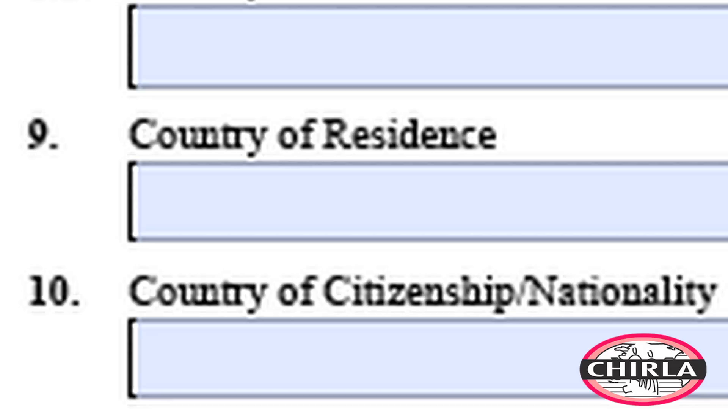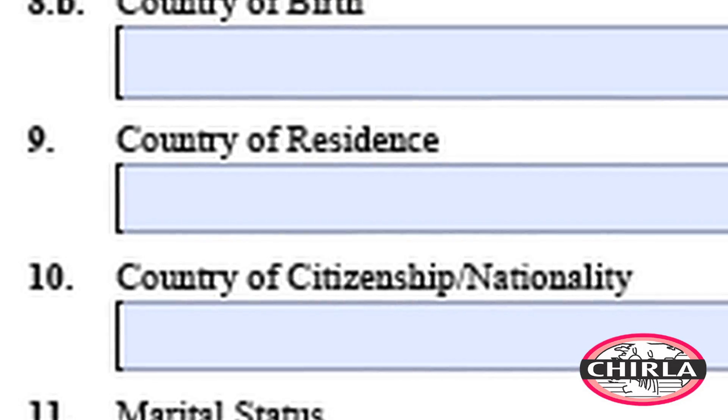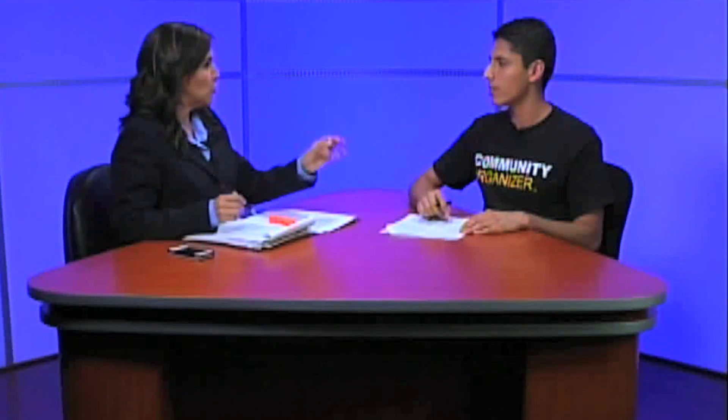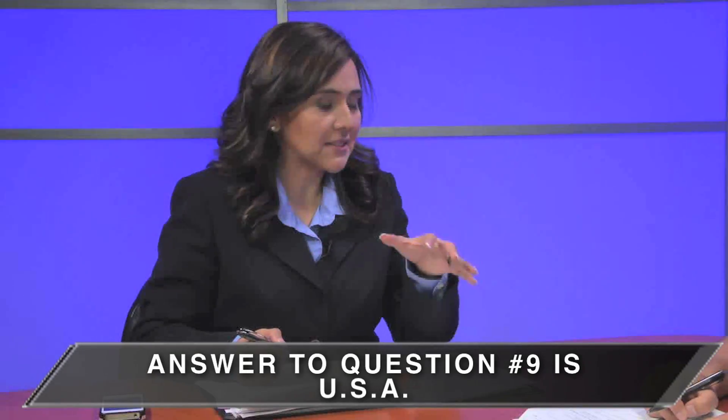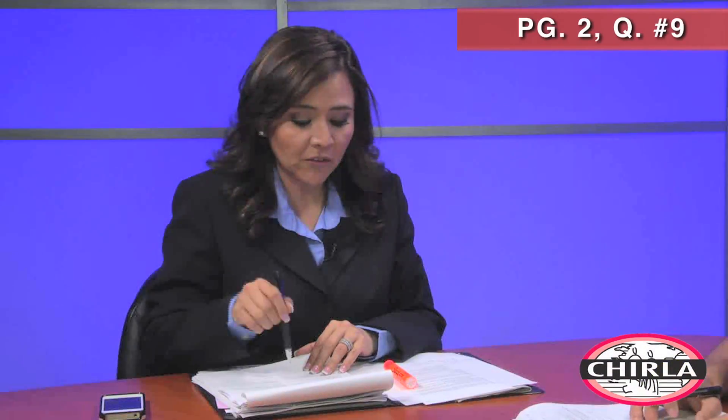Question 9 on the same page asks for country of residence. What should they put on this section? USA. That is the only answer — it's automatic — because everyone who applies for deferred action must reside in the United States. So the answer to question number 9 is USA.